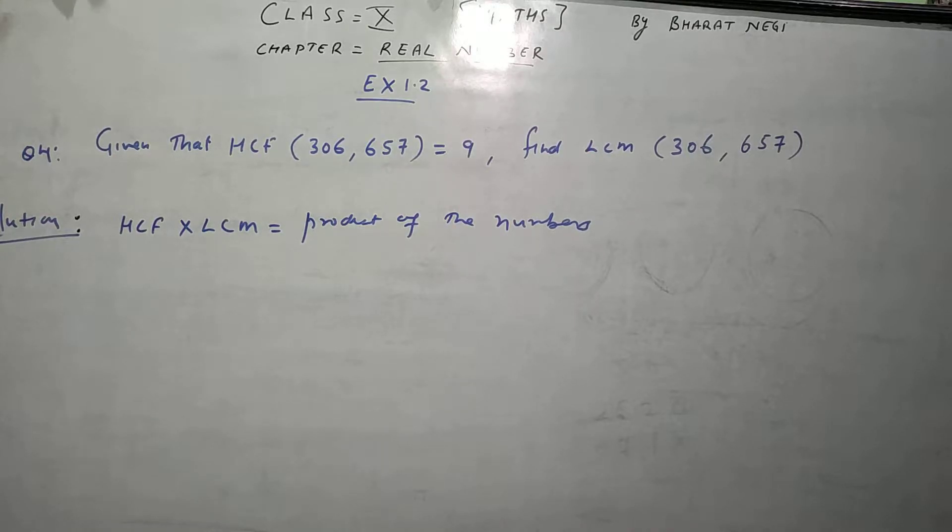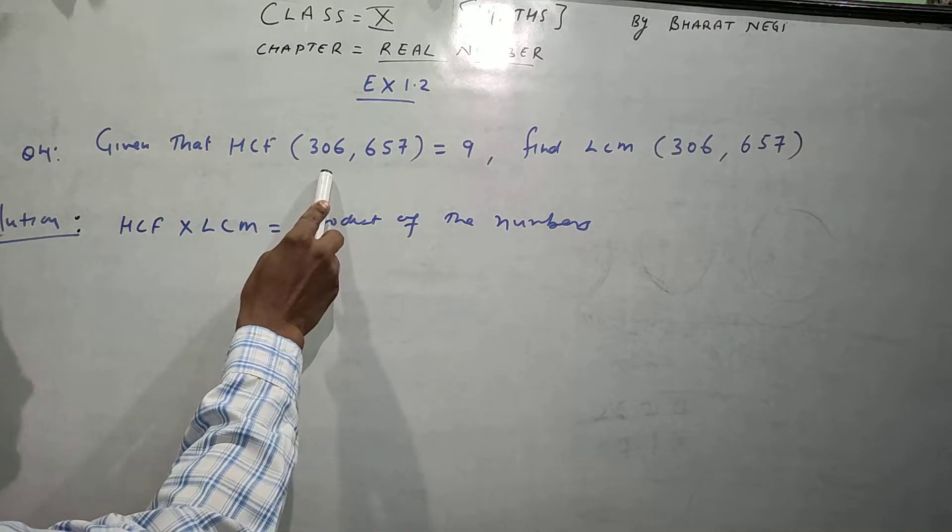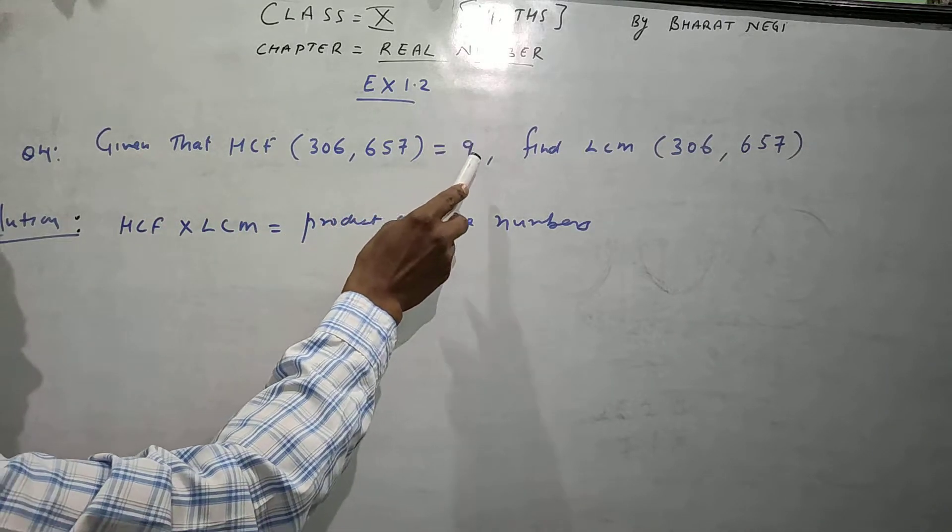Now, we will do question number 4. It is given that HCF of 306 and 657 equals 9.